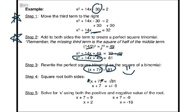Finally, solve for x using both the positive and negative value of the root. So x plus 7 equals positive 9, x plus 7 equals negative 9. Subtract 7 from both sides, and you get x equals 2 and x equals negative 16. Those are our solutions by completing the square.